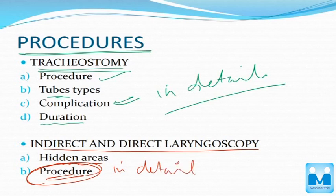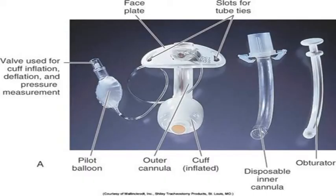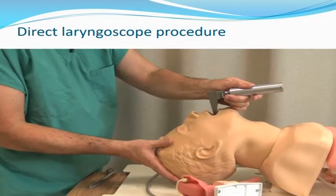Nowadays a lot of clinical questions are coming, so we have to know how procedures are done properly. These are the tracheostomy tubes and their parts — you have to know in detail. This is the direct laryngoscope procedure — note the left hand.